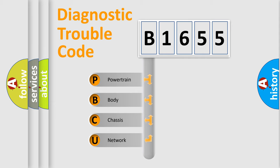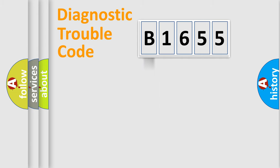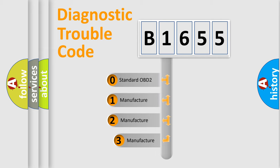We divide the electric system of automobile into four basic units: Powertrain, Body, Chassis, and Network. This distribution is defined in the first character code.